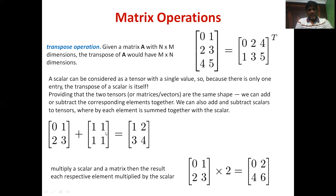Adding two matrices results in element-wise addition of corresponding elements: 0 plus 1, 1 plus 1, 2 plus 1, and 3 plus 1. Multiplying a scalar with a matrix results in a matrix where the scalar is multiplied with every element of the given matrix: 2 times 0, 2 times 1, 2 times 2, 2 times 3. This is scalar multiplication of a matrix.